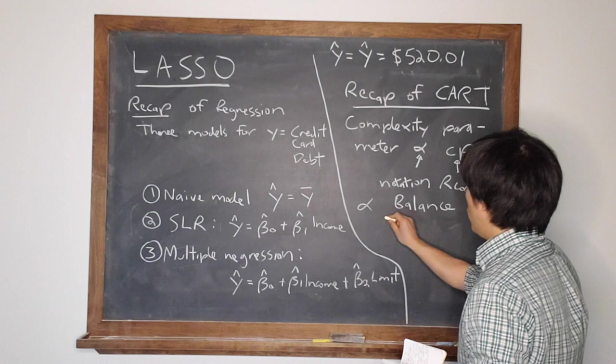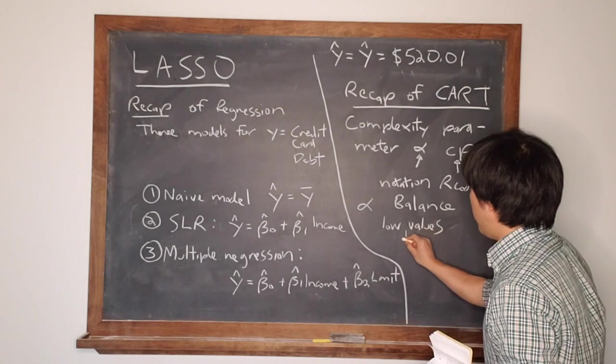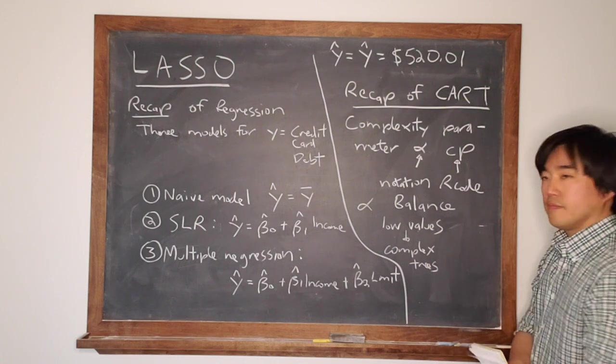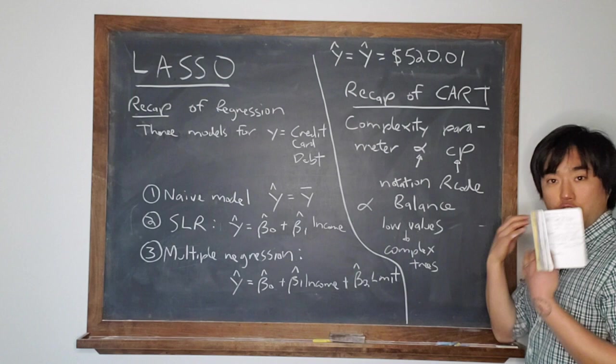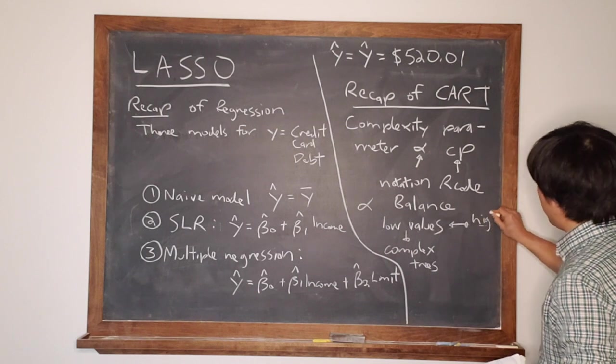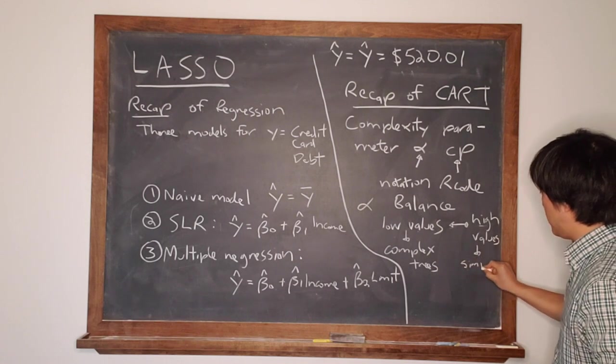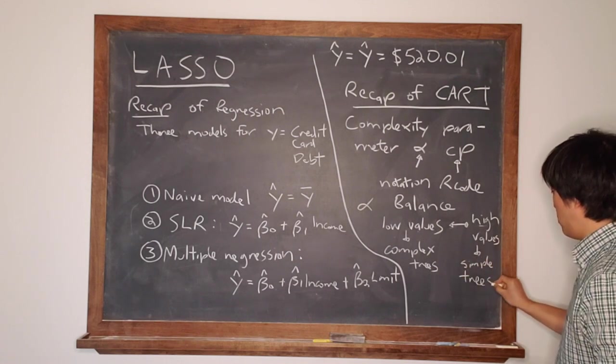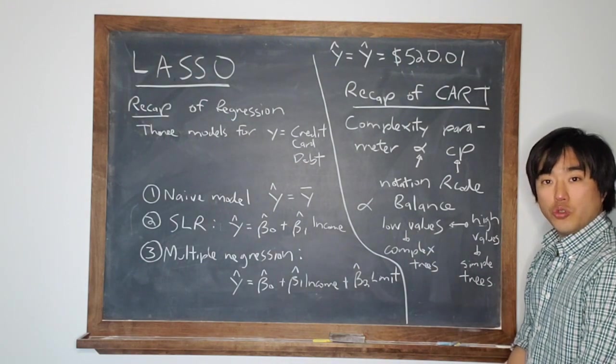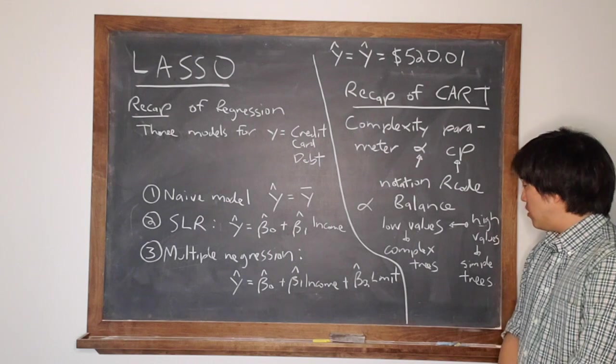That for low values, what do we have? We have complex trees. For low values of the complexity parameter alpha, we tended to get trees that got very, very deep. But on the other hand, for high values, we got very simple trees. In fact, when we really dialed up the value of lambda, we got the most simple tree possible, which was simply a root.